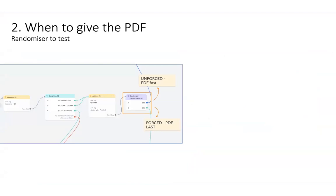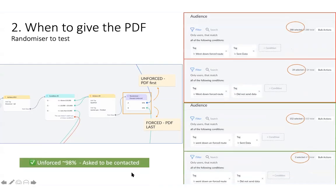The second problem was when to give the PDF lead magnet — they came for it, but would they take it and run? Or if you give it first, would you lose the lead? A randomiser test was run, sending 50% of traffic down the forced route — collect details first, then give the PDF — and 50% down the unforced route — give the PDF first, then collect details. It turned out that 98% of people still wanted to be contacted despite being given the lead magnet first. So leading with the lead magnet first was a really good idea. Only 24 people out of 300 said they didn't want to send their data in exchange for the lead magnet.